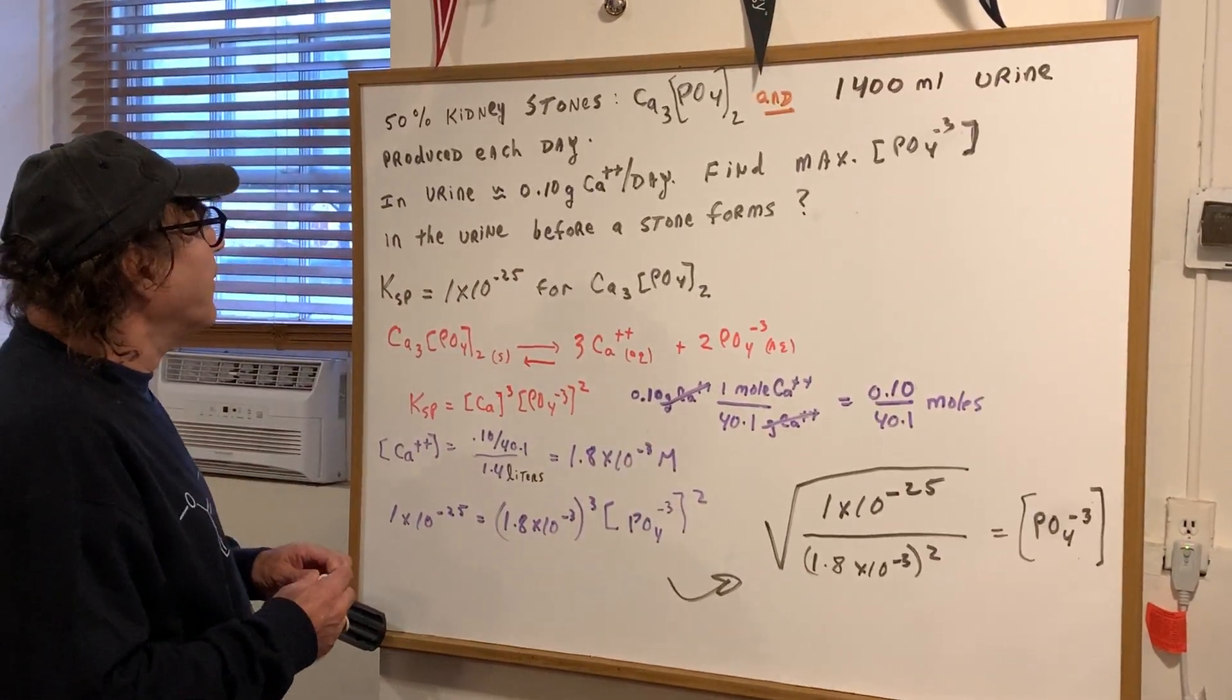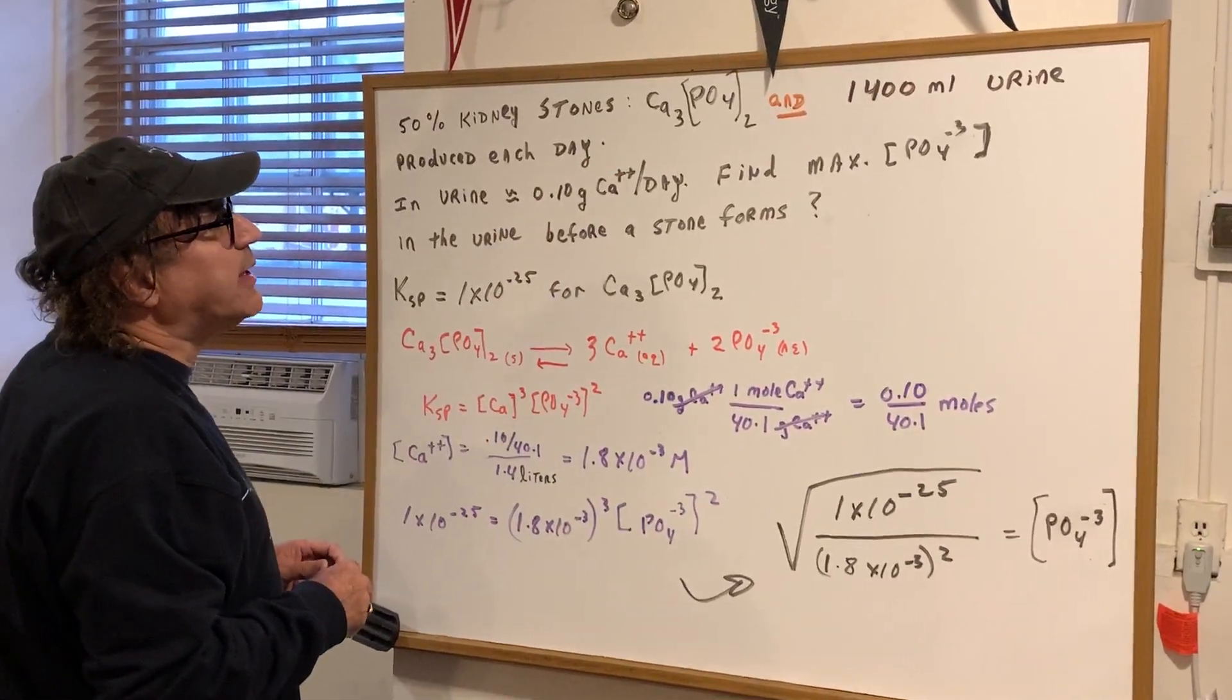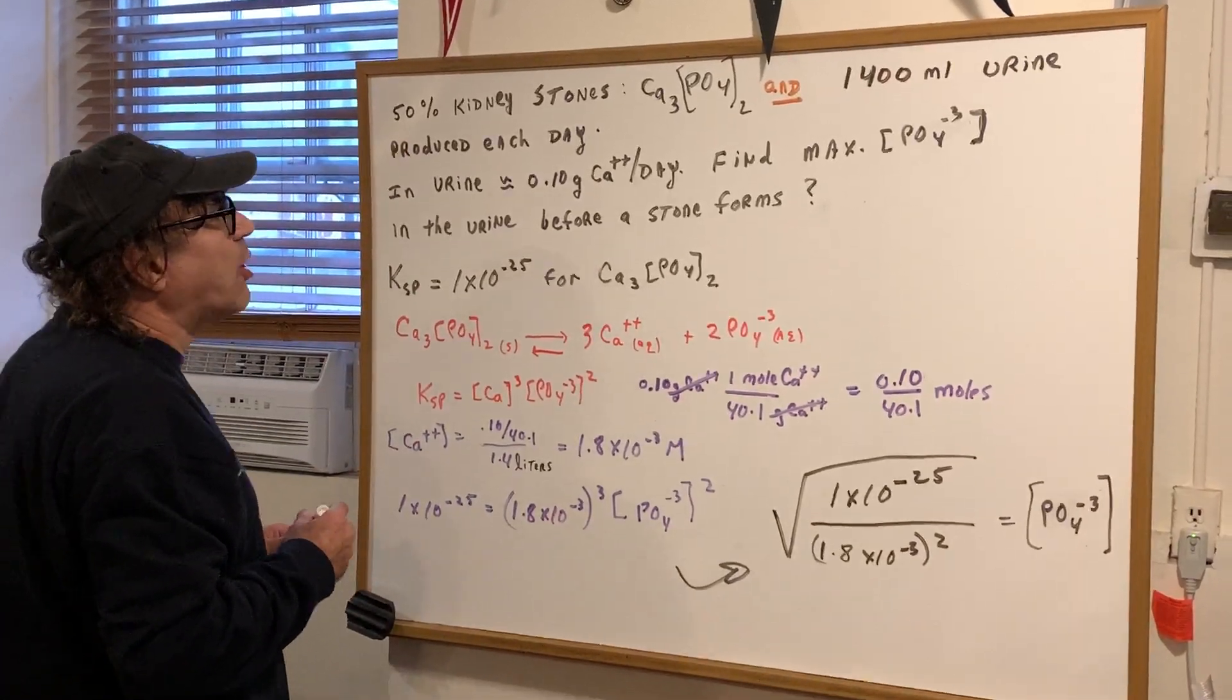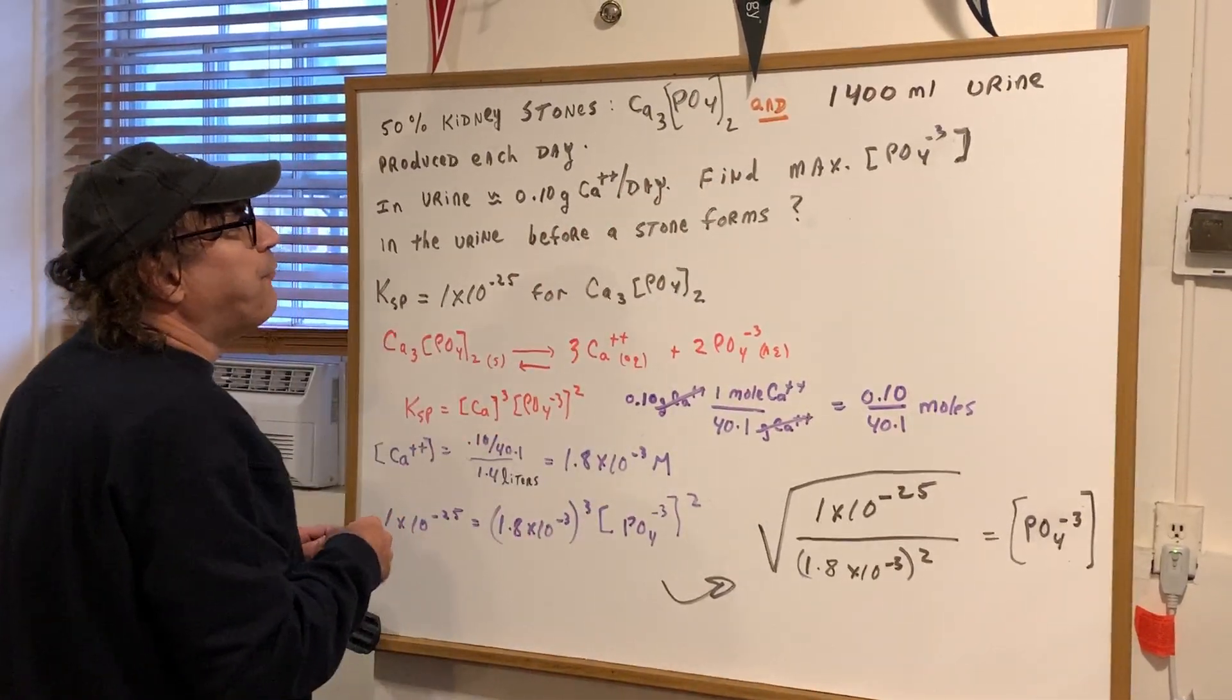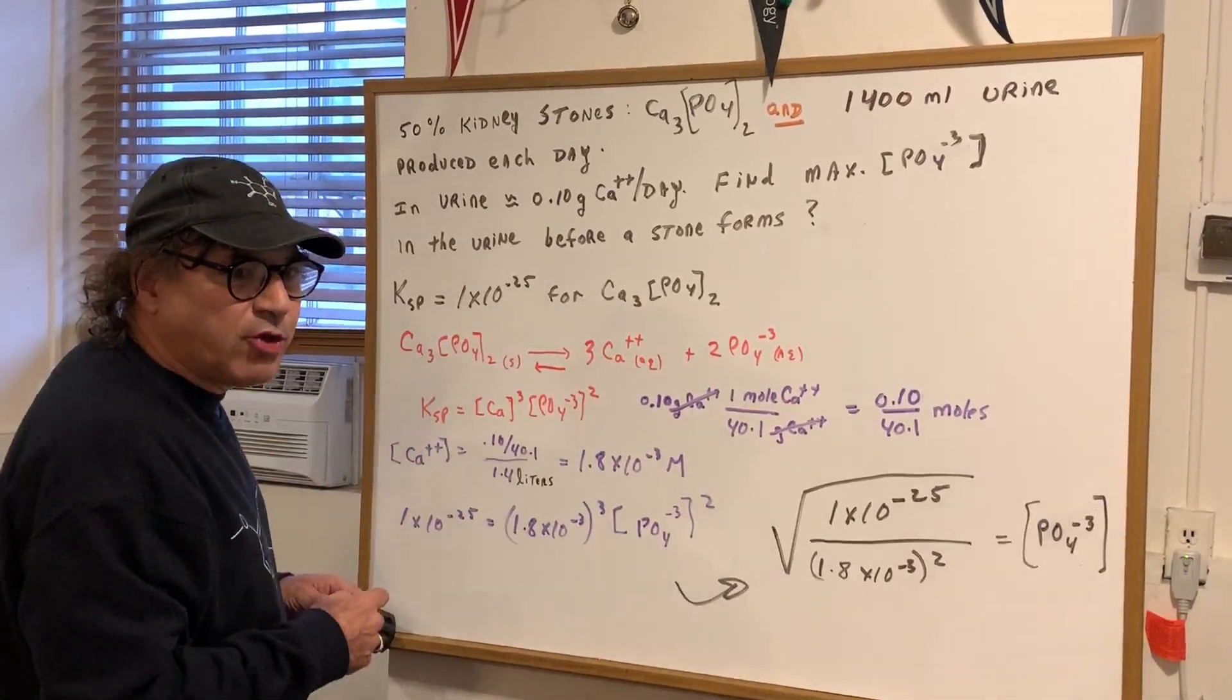This is an unusual question. Kidney stones are composed of calcium phosphate, and about 50% of kidney stones will contain that. 1,400 mLs of urine are produced each day. So I give you that information.